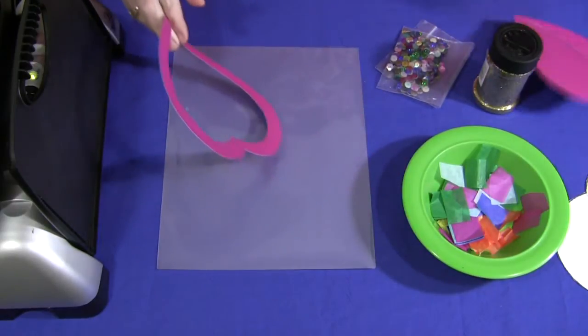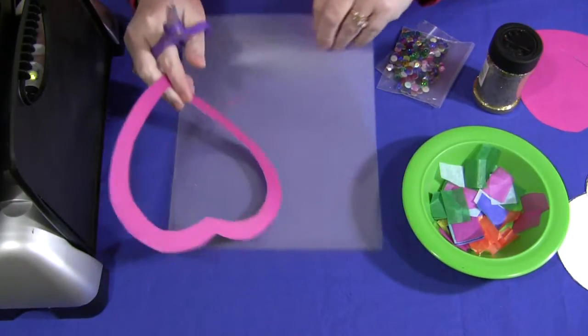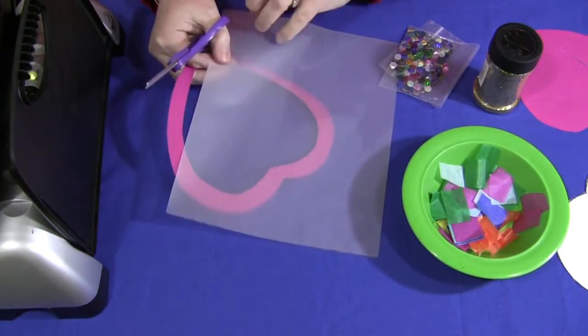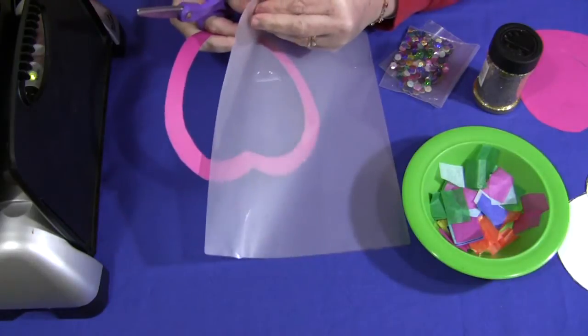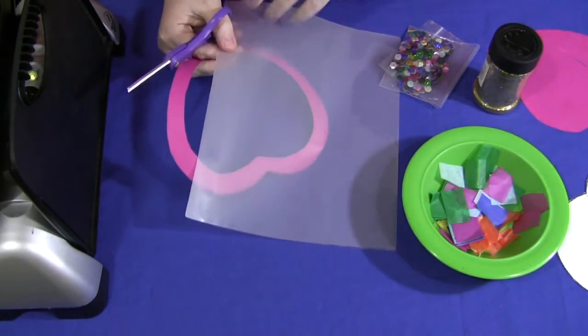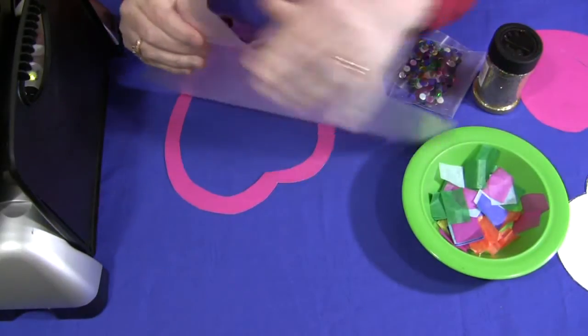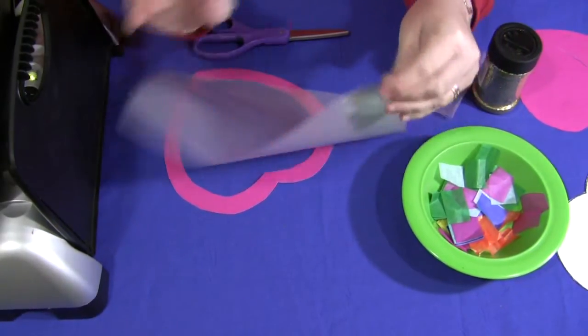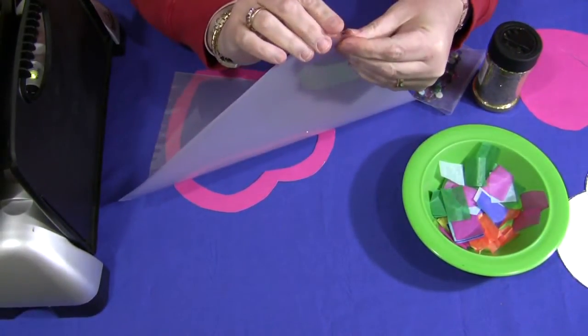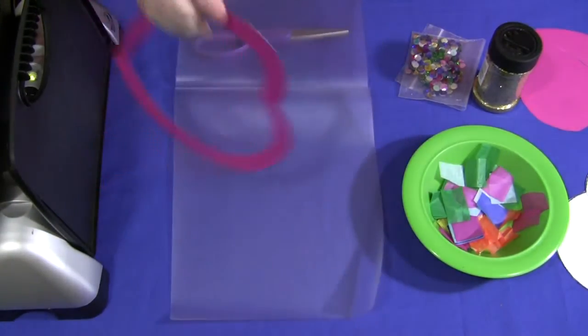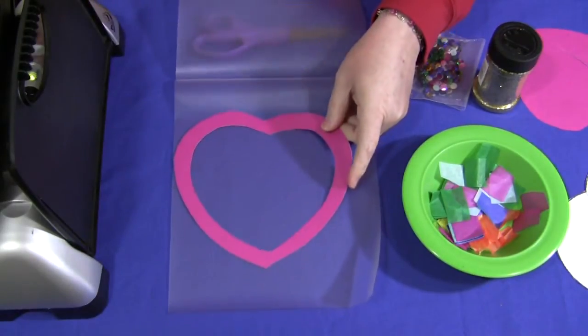And once you have that done, you're going to open your laminating pouch or if you're using contact paper, you can set the pattern on there too. And the thing about the laminating pouches is they're not always easy to find the edges on there, but we'll get it. There we go. All right. So you have your patterns set right there.